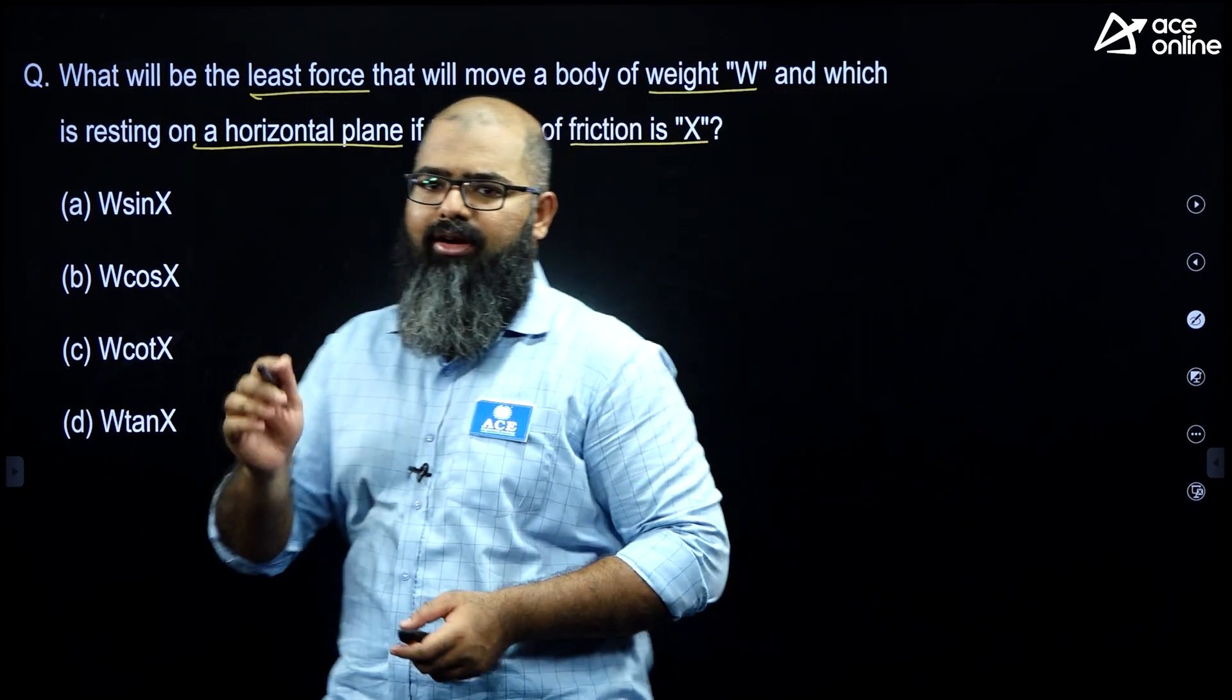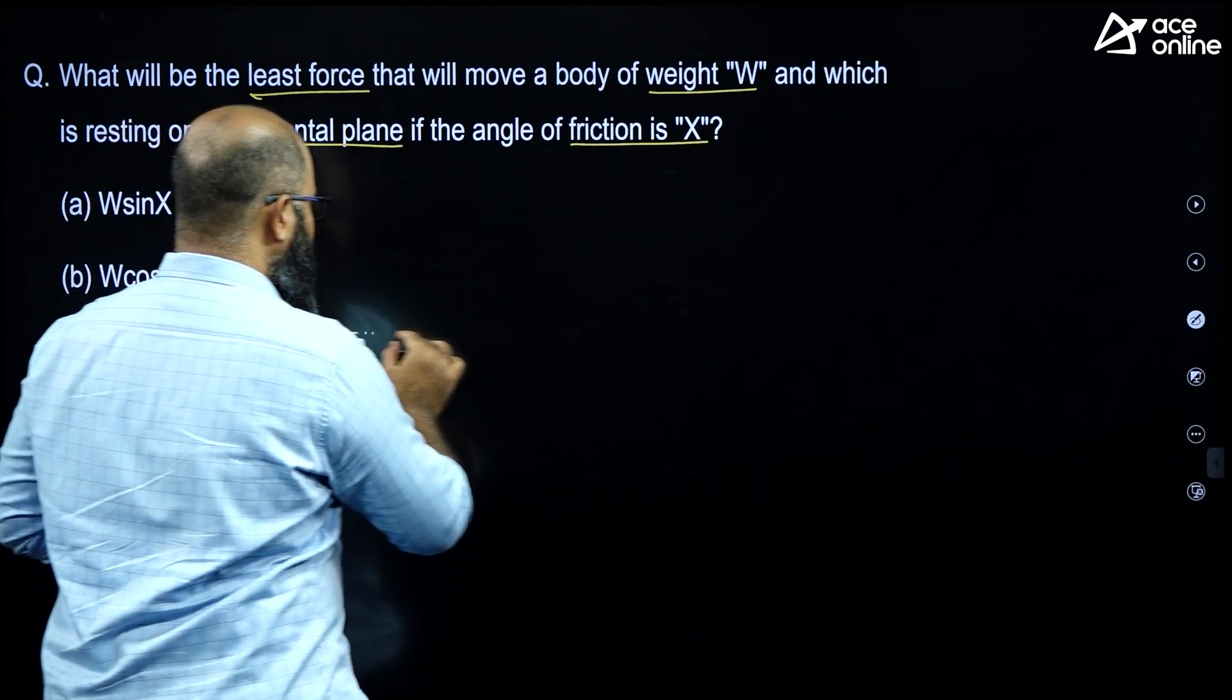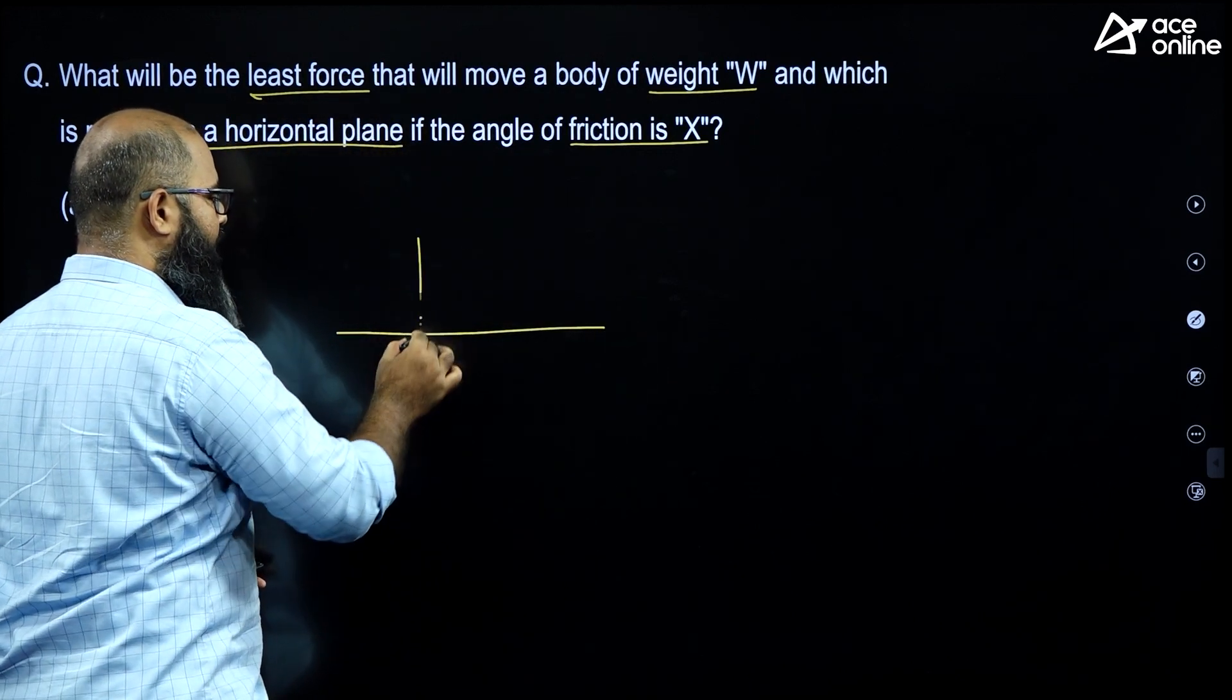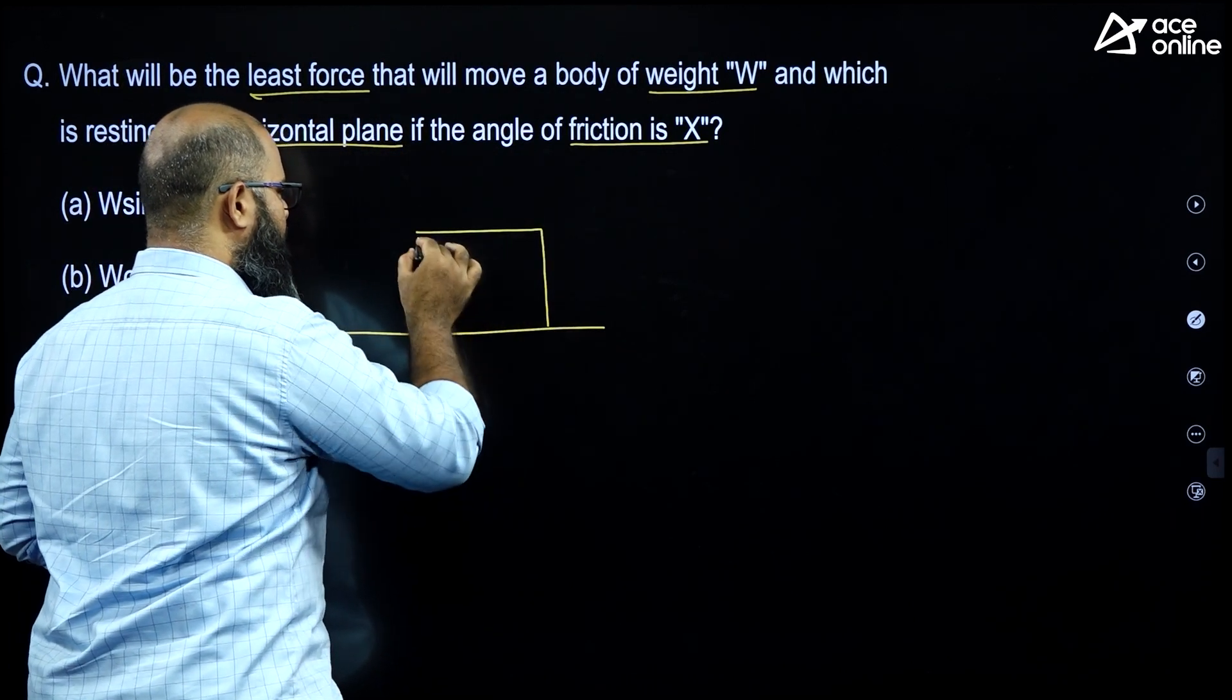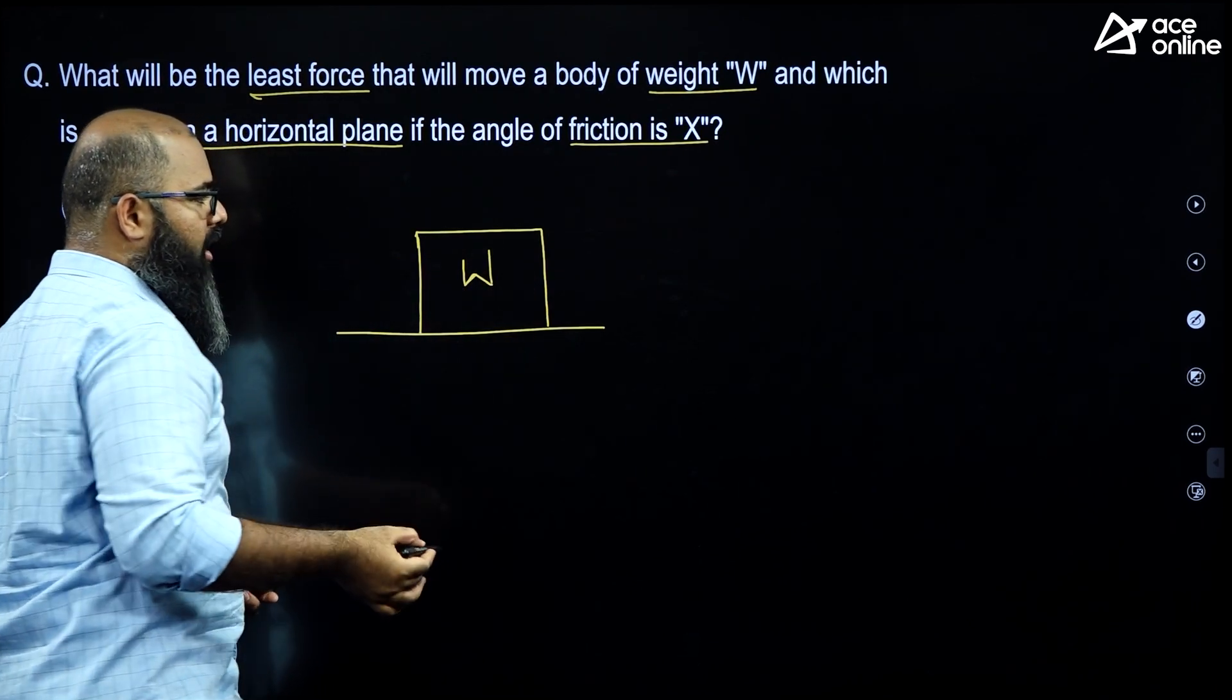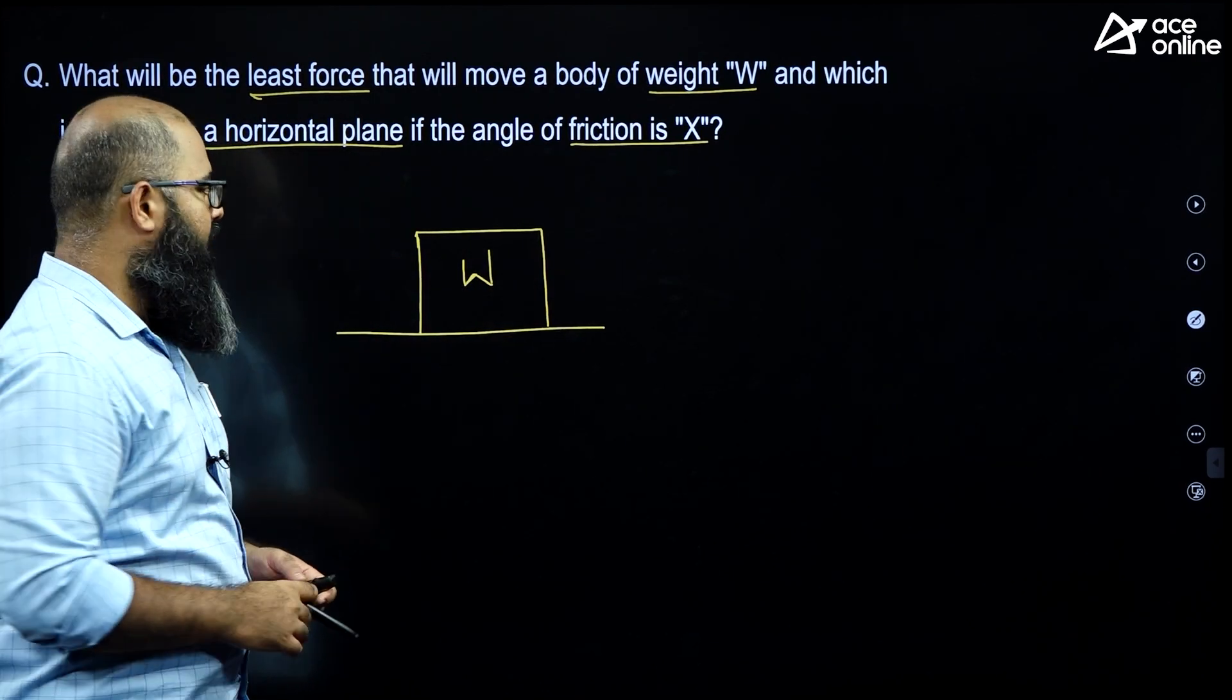Let us construct a small diagram. Let us say, this is a horizontal surface we are having. The block W is over here. We will consider this body to be a particle because dimensions are not provided.